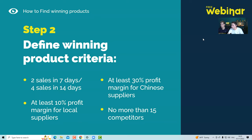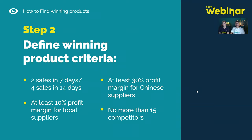I see some participants raising hands and messages in the chat — I'll address those questions in between the slides and during the live demonstration, so stay tuned. The last criterion is no more than 15 competitors, at least in the beginning, to give you higher chances of getting traffic from eBay. In very strong niches like Christmas string lights you can have many more competitors, but when doing your usual competitor analysis you should stick to no more than 15. Zik Analytics gives you all this data automatically during research.